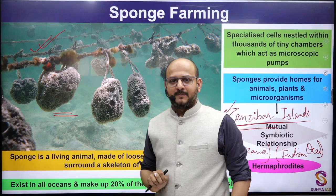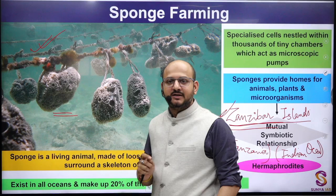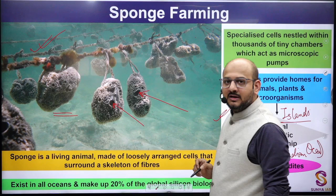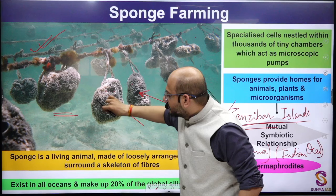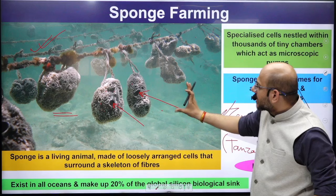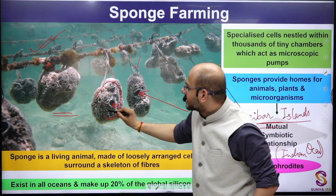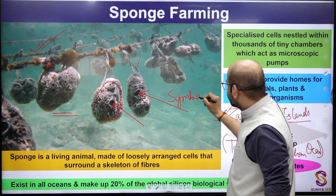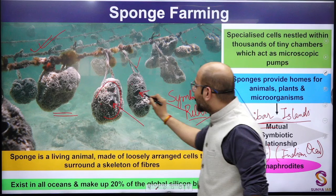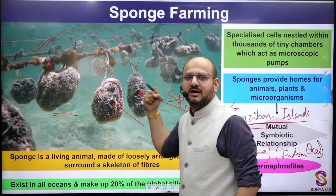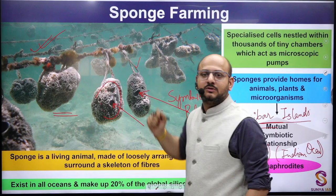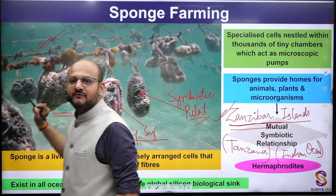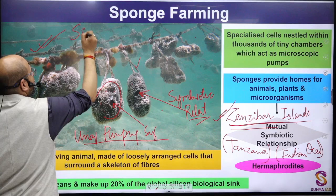Sponge farming has dual benefits. First, it benefits climate change mitigation. Second, sponges are living animals made of loosely arranged cells surrounded by a skeleton with pores. This helps for the symbiotic relationship of different microorganisms — it works like a place for their symbiotic growth and acts like a unique pumping system that absorbs different kinds of minerals, particularly silica.